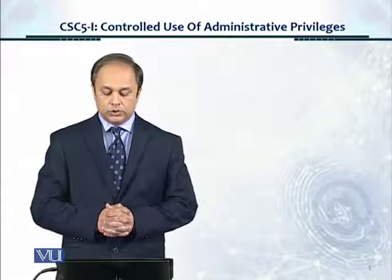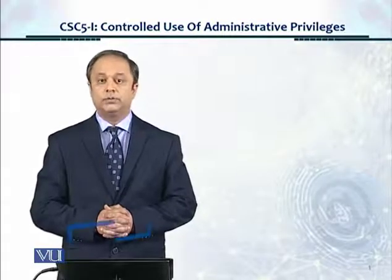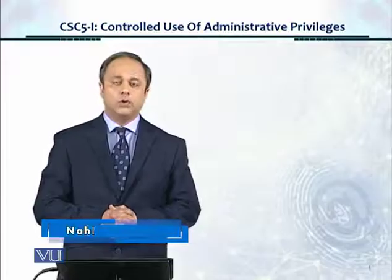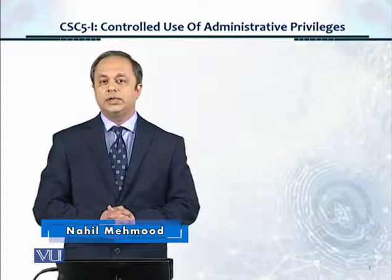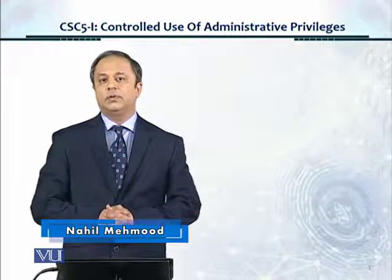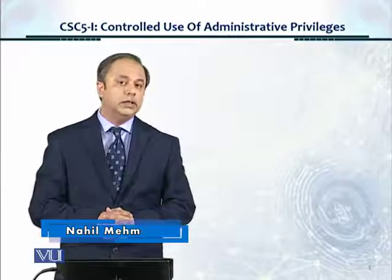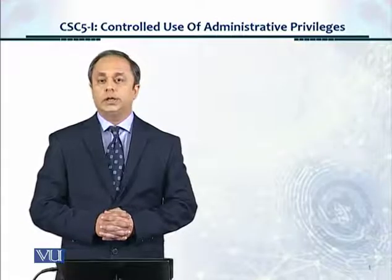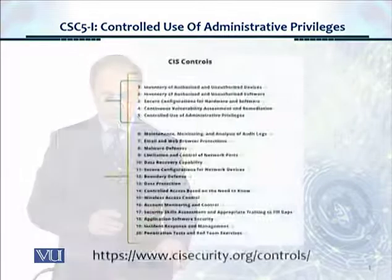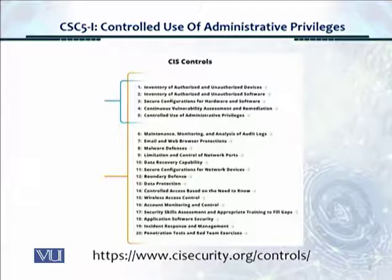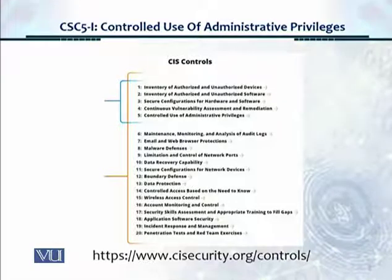Welcome. In this module, we're going to talk about critical security control number five, controlled use of administrative privileges, which is very important because the administrators who have the highest privilege level need to be monitored and controlled, and whatever their activities are, they need to be approved. This is the overall view of the critical security controls from CIS, and we're now on the fifth control, controlled use of administrative privileges.